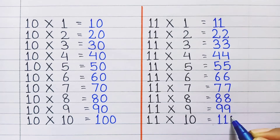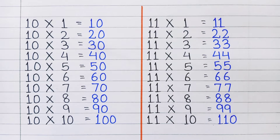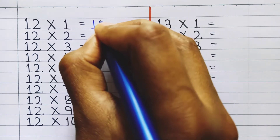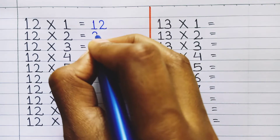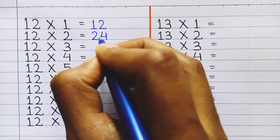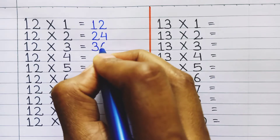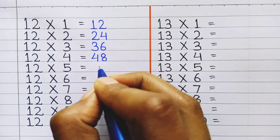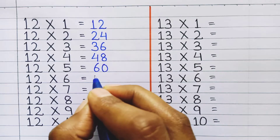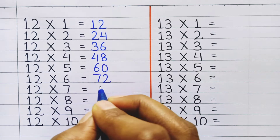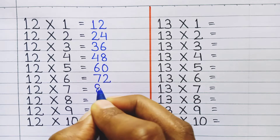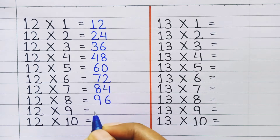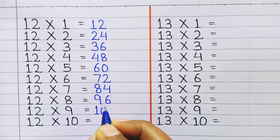11 ten's a 110. Table of 12: 12 one's a 12, 12 two's a 24, 12 three's a 36, 12 four's a 48, 12 five's a 60, 12 six's a 72, 12 seven's a 84, 12 eight's a 96, 12 nine's a 108.